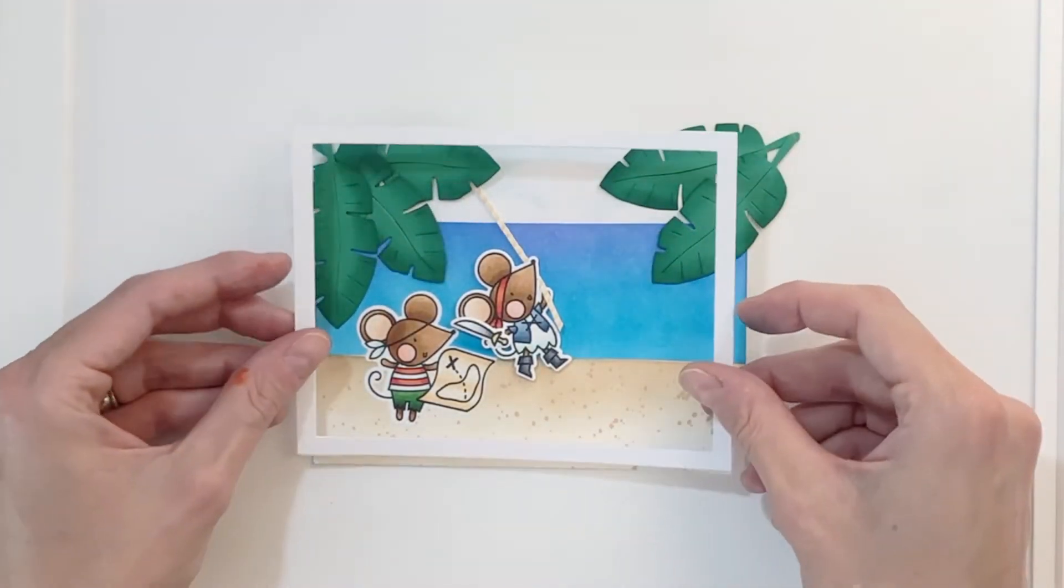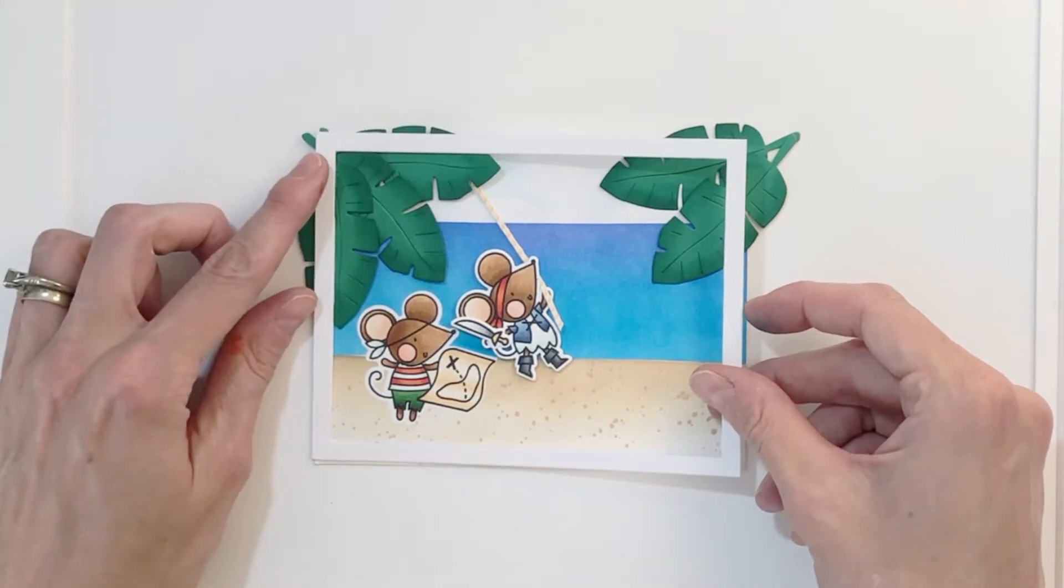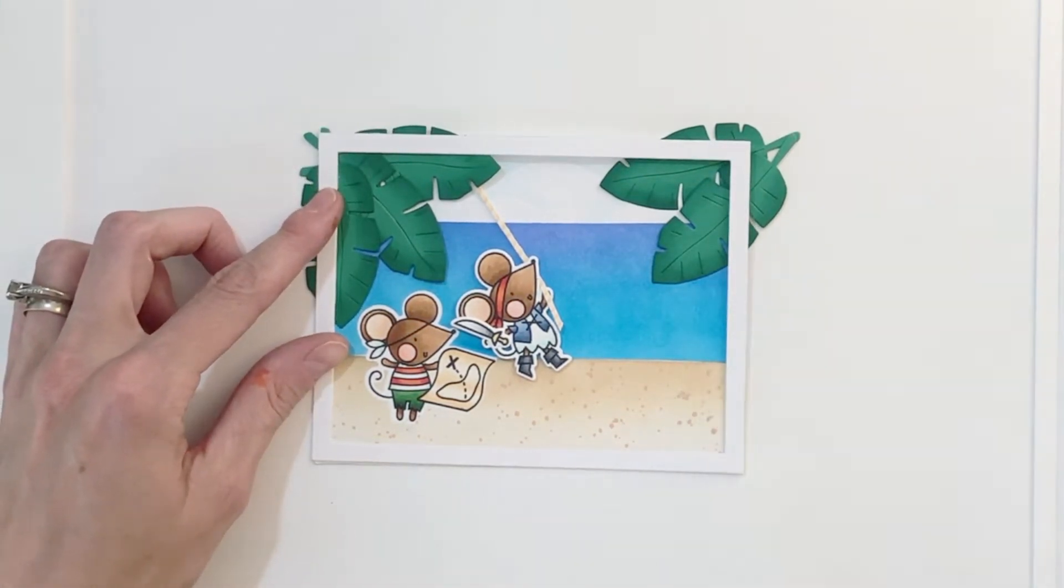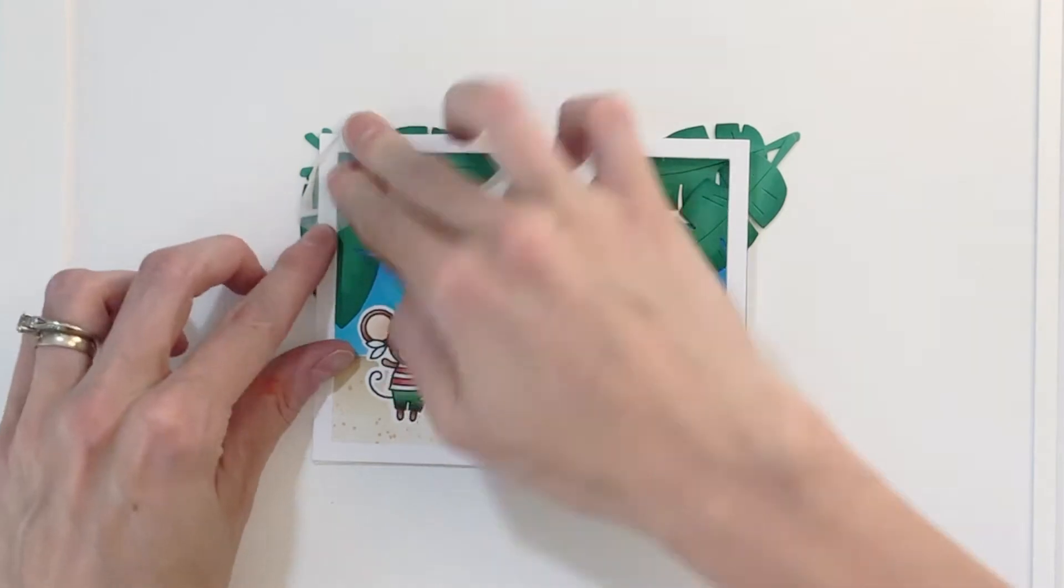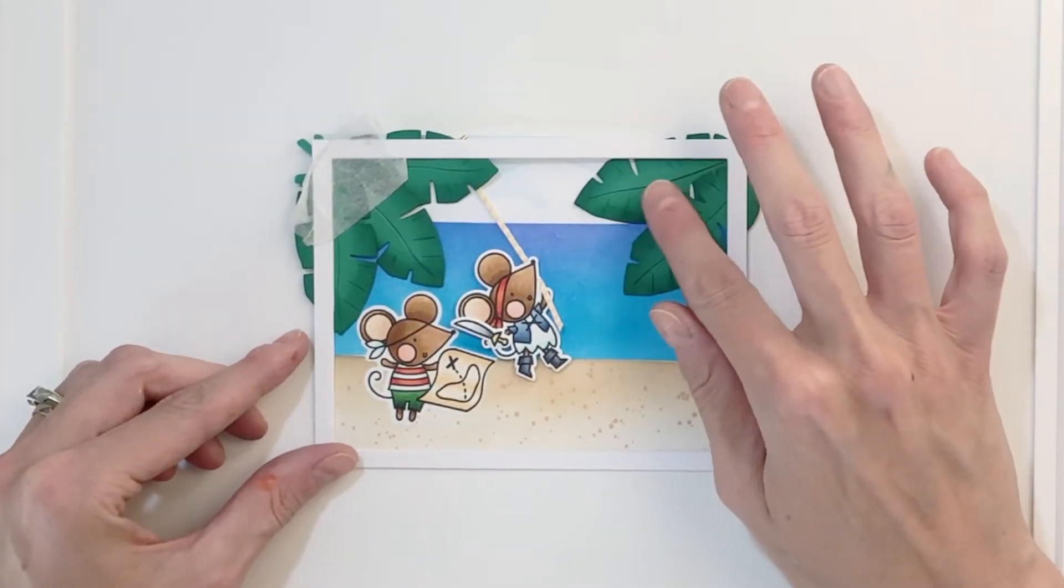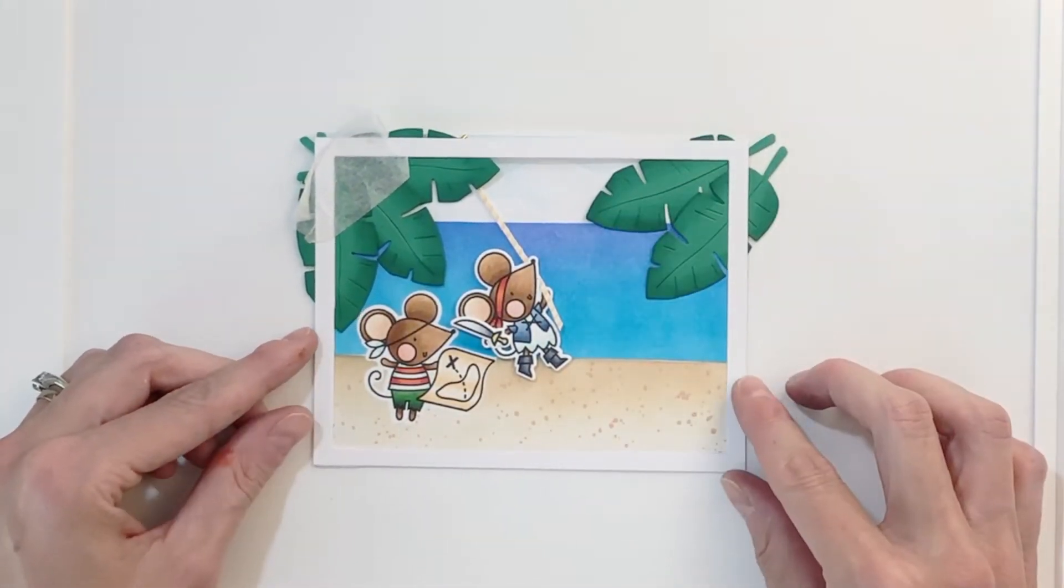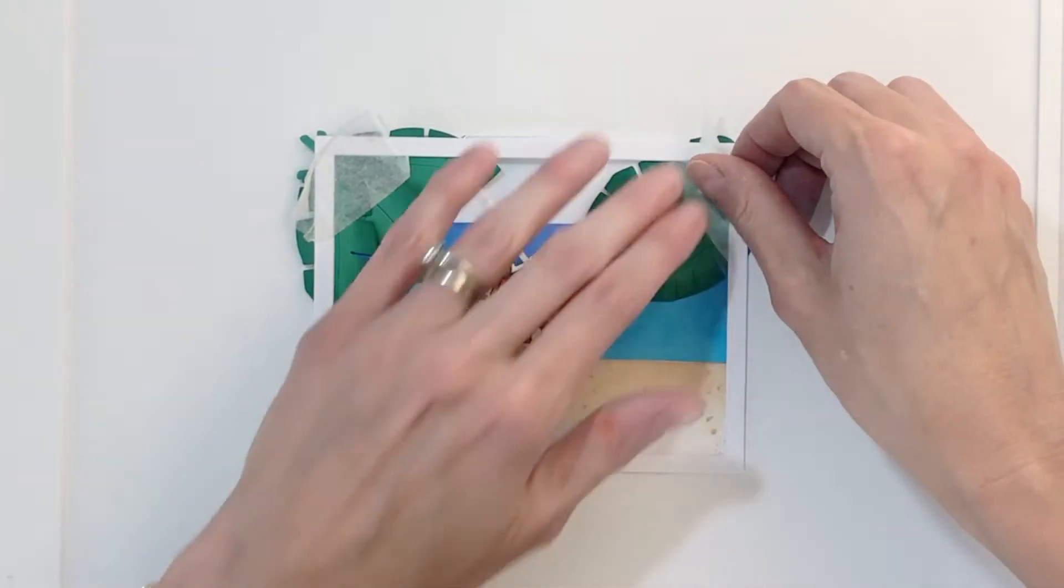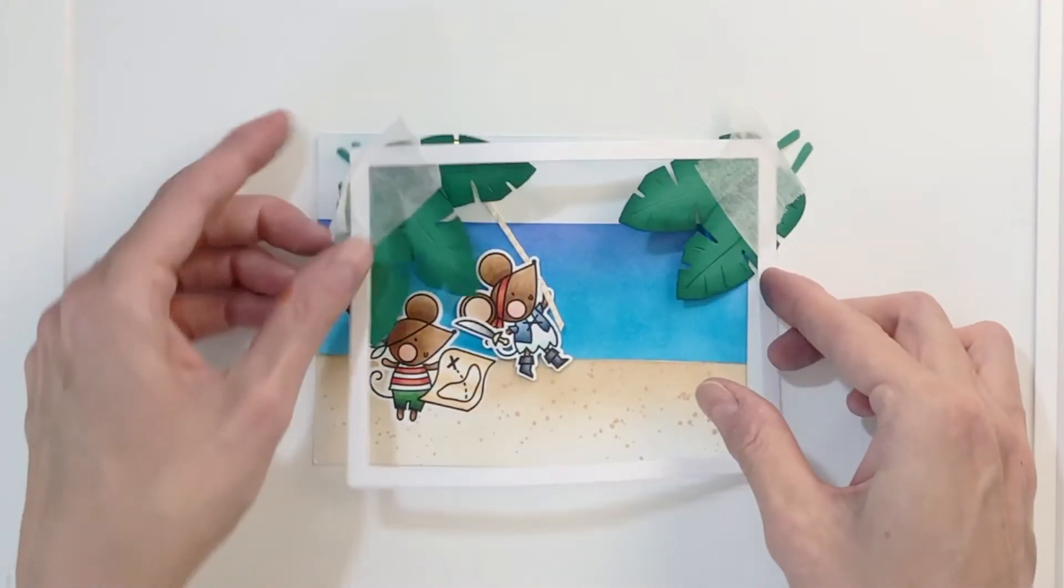I grabbed a frame that I created here from 110 pound white cardstock using the Rainbow Panel die. And now I'm just positioning that over the leaves. This frame is going to kind of hold everything in place and really kind of like clean the edges up on this card.